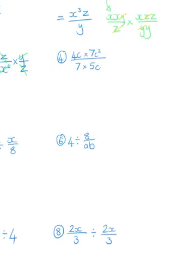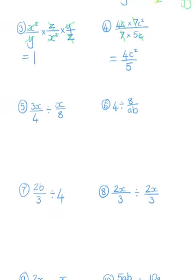Question 4. I have 4c times by 7c squared, and then 7 times by 5c. Remember, we can cancel anything in the numerator with anything in the denominator, as long as the fractions are being multiplied by each other. So I've cancelled off a few things: c cancelled with c, and 7 cancelled with 7, so I've got 4c squared in the numerator and 5 in the denominator. I can't simplify any further, so let's leave it like that.